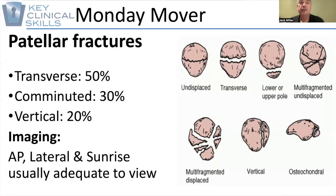For imaging, plain film x-rays — either AP, lateral, and/or sunrise views — are usually adequate to visualize these fracture lines.